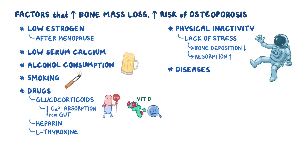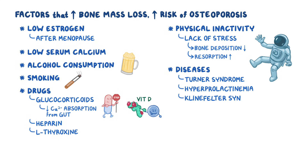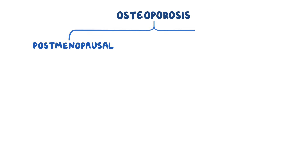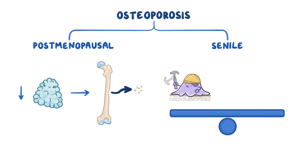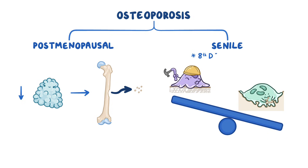There are also diseases that can cause osteoporosis, like Turner's syndrome, hyperprolactinemia, Klinefelter syndrome, Cushing syndrome, and diabetes mellitus. The two most common types of osteoporosis are postmenopausal osteoporosis and senile osteoporosis. In postmenopausal osteoporosis, decreased estrogen levels lead to increased bone resorption. With senile osteoporosis, osteoblasts gradually lose the ability to form bone while osteoclasts continue unabated, so bone resorption overtakes bone formation around the 8th decade of life.